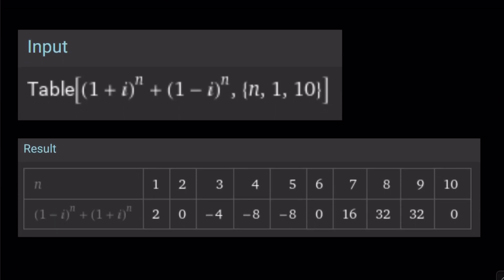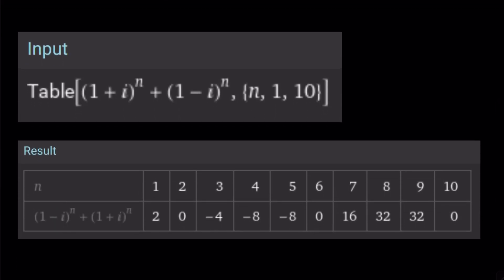But here's the table that I was talking about. Notice the values of 1 plus i to the n, 1 minus i to the n, that sum for different values. Here's something interesting. If n is 2 mod 4, you always get 0 from that sum. Isn't that interesting? And also, another pattern that I noticed was that these two consecutive powers always repeat. And this brings us to the end of this video.